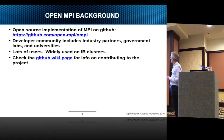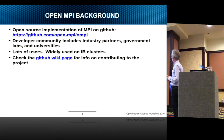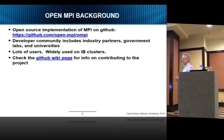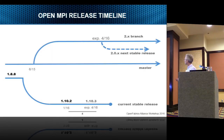OpenMPI is on GitHub. It is open source, and especially since it's on GitHub — in my mind it's one of the greatest things in software development in the last 20 years — it's a community of industry partners, government labs, and universities. There are lots of users. It's widely used on IB clusters. If you want more information about how to contribute or report bugs, there's a GitHub Wiki page link on the slide.